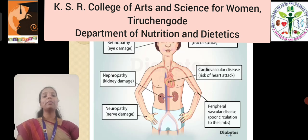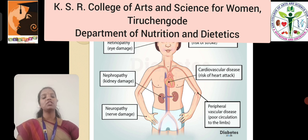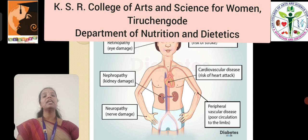There are two major complications: microvascular complications and macrovascular complications. Microvascular complications involve small vessels such as capillaries, whereas macrovascular complications involve large vessels such as arteries and veins. The three main complications found in microvascular disease are retinopathy, which is damage to the eye; nephropathy, which is damage to the kidney; and neuropathy, which is damage to the nerve.